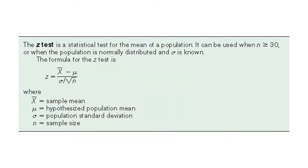The Z-test is used for the mean of a population. It can be used when n is greater than or equal to 30, or when the population is normally distributed and the population standard deviation is known. The formula is: Z equals x-bar minus mu, all over sigma divided by the square root of n. Here, x-bar is the sample mean, mu is the hypothesized population mean, sigma is the population standard deviation, and n is the sample size.